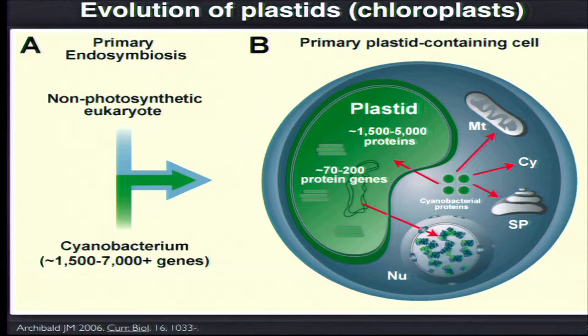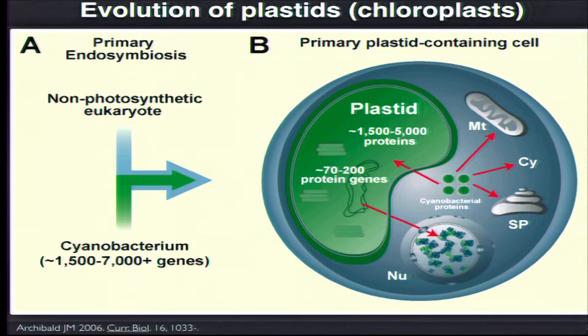As we heard last night, chloroplasts or plastids are one of the two organelles of eukaryotic cells known to be endosymbiotically derived. When we think about a bacterial cell that entered into an endosymbiotic relationship with a eukaryote, what leads us to conclude that the endosymbiont is now a fully integrated organelle? In broad strokes, at least 1,500 or so genes probably came in with the cyanobacterial progenitor of the plastid.